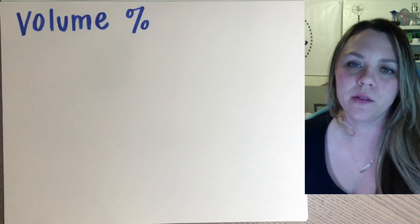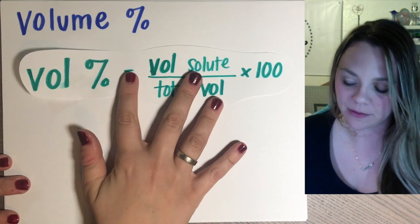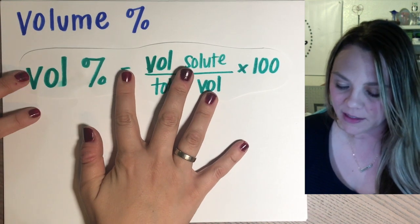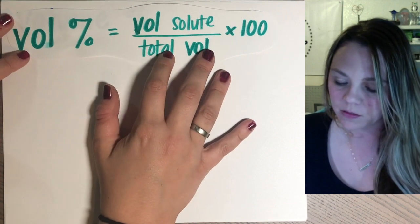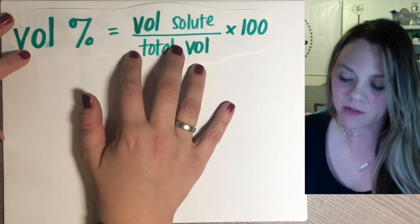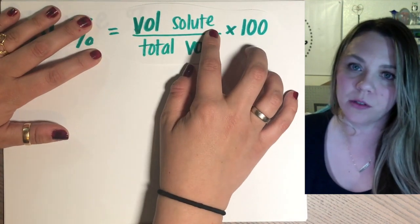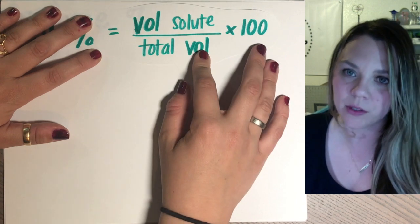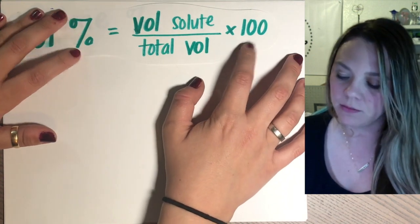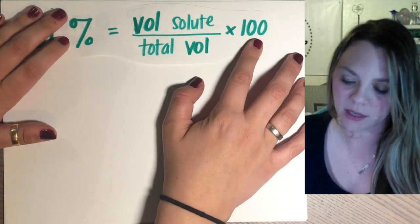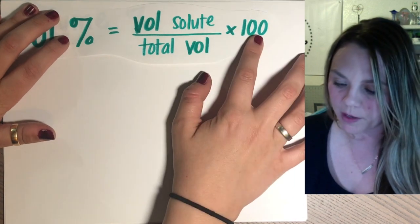So volume percent is another very easy equation. The volume percent of a solution is gonna be the volume of your solute divided by your total volume, multiplied by 100 because it is a percent. So anything that's a percent you always multiply by 100.